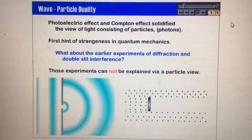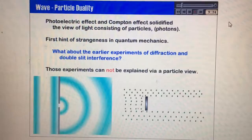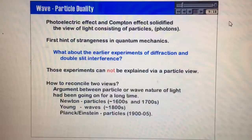So we have some kind of problem here, it seems like. We have two different views. Some experiments demonstrate that it's a particle, some demonstrate that it's a wave. So how do we reconcile this problem?